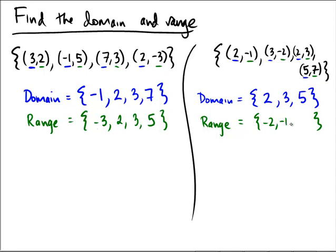So the range is negative 2, negative 1, 3, and 7. So notice that the range might have more values than the domain, or the domain might have more values than the range, potentially.